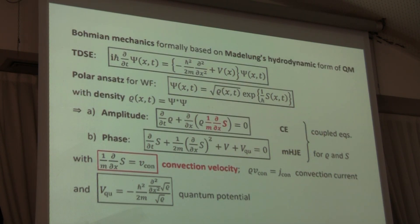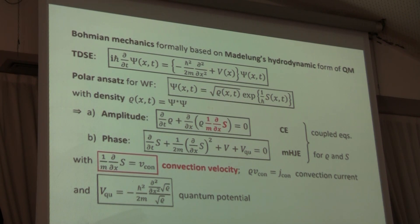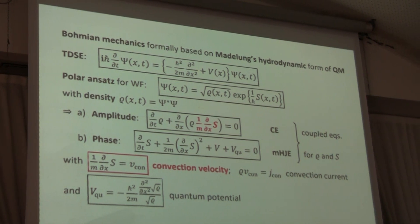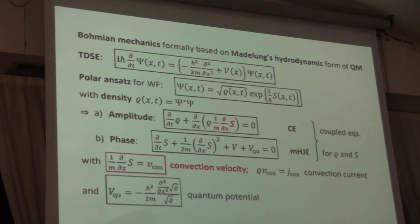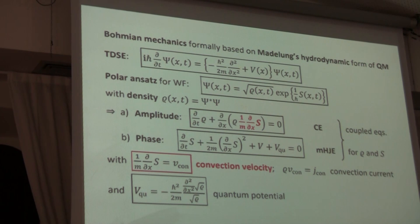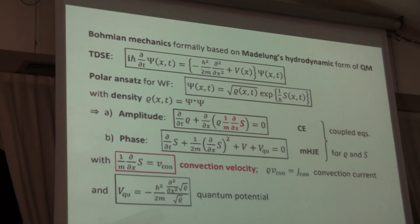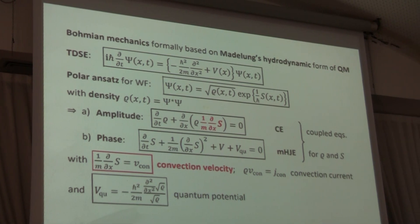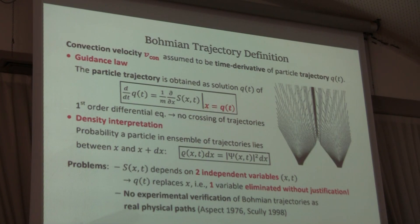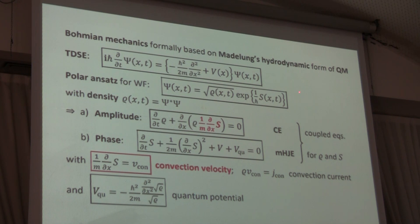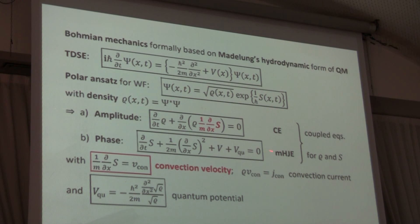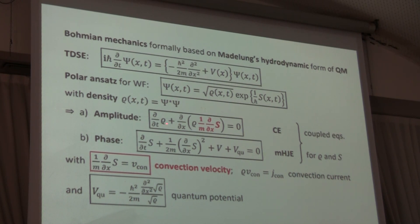Let me tell you a bit about the formal basis of Bohmian mechanics. It is essentially the hydrodynamic formulation of quantum mechanics that goes back to Madelung in 1926. He rewrites the complex Schrödinger equation in terms of two real equations by making this polar ansatz for the wave function, and inserting this into the Schrödinger equation, he gets one equation for the density and one equation for the phase.